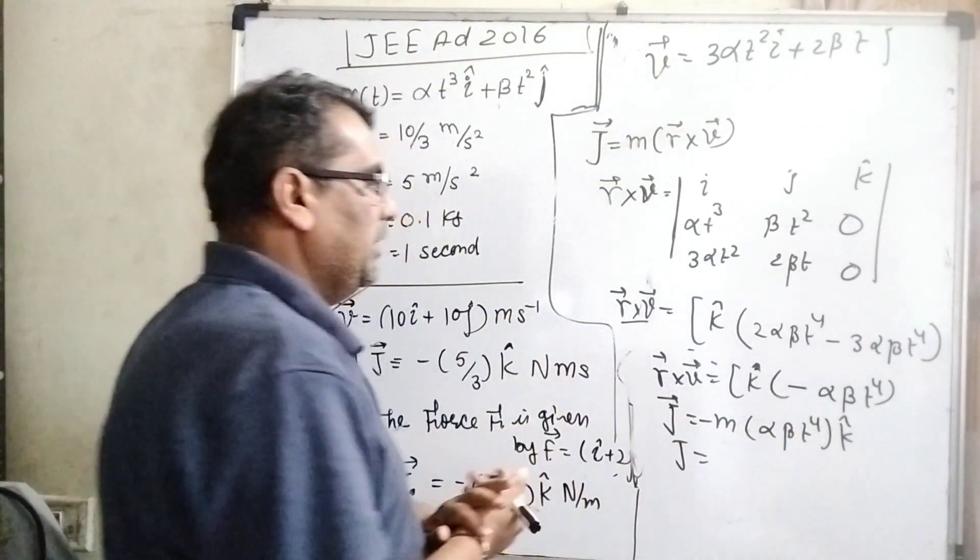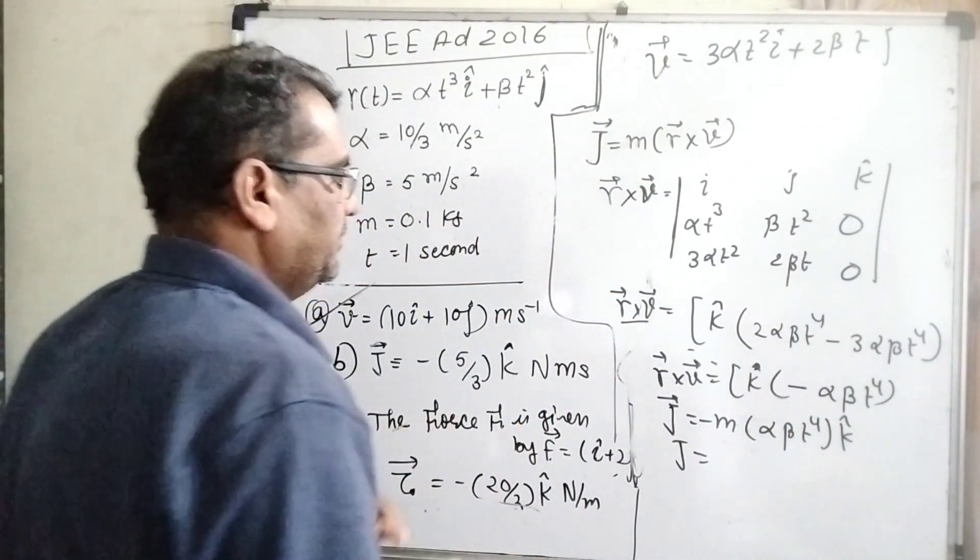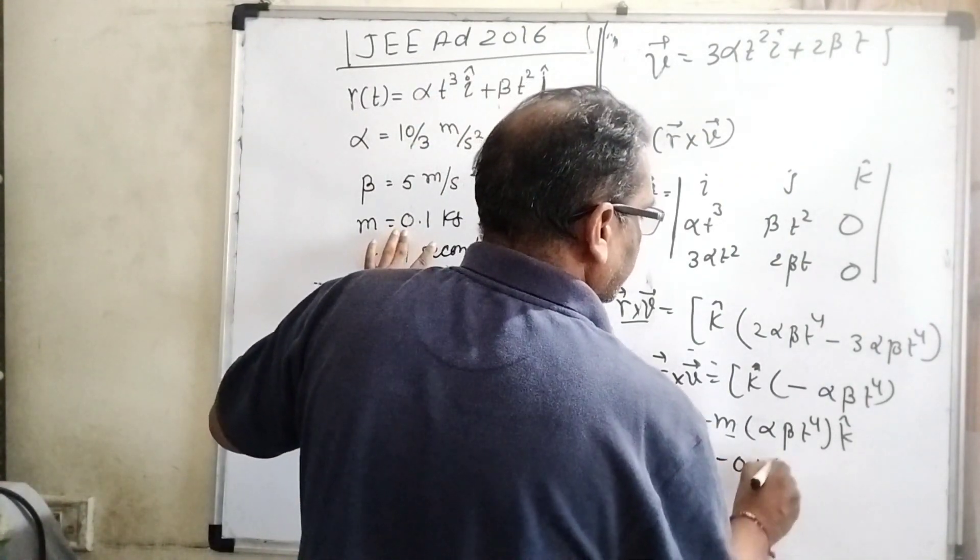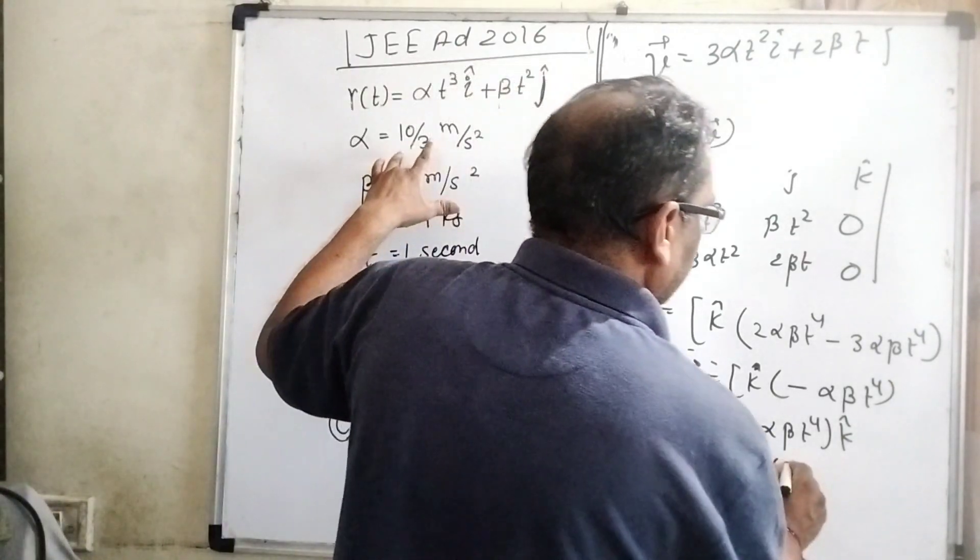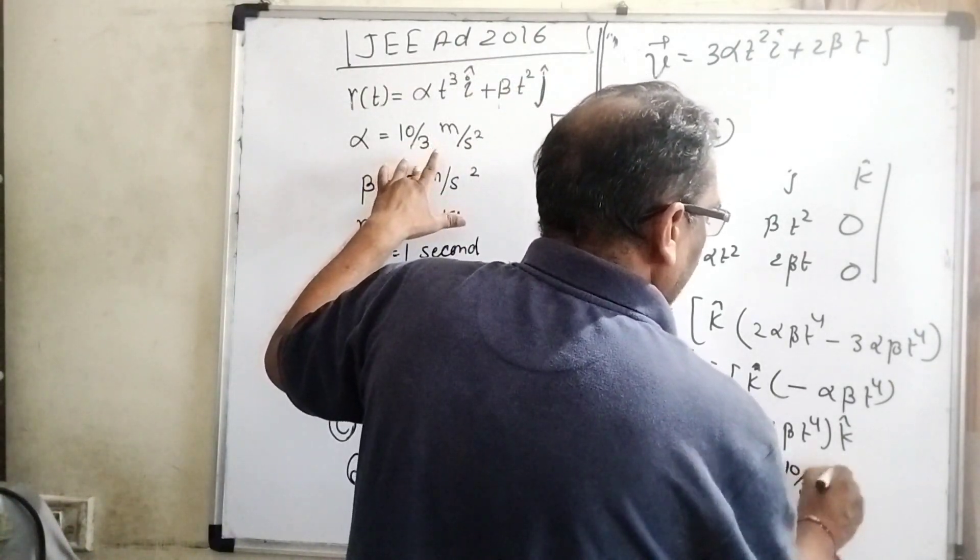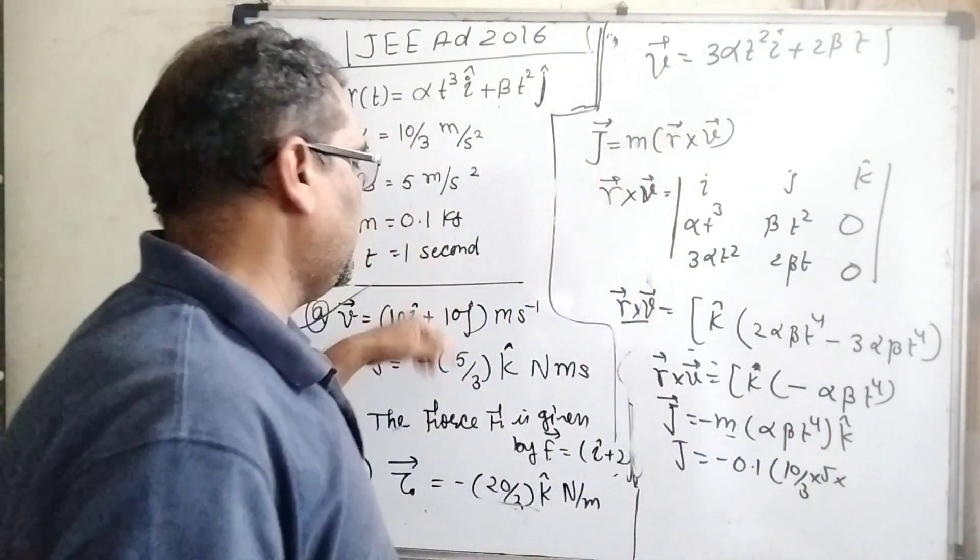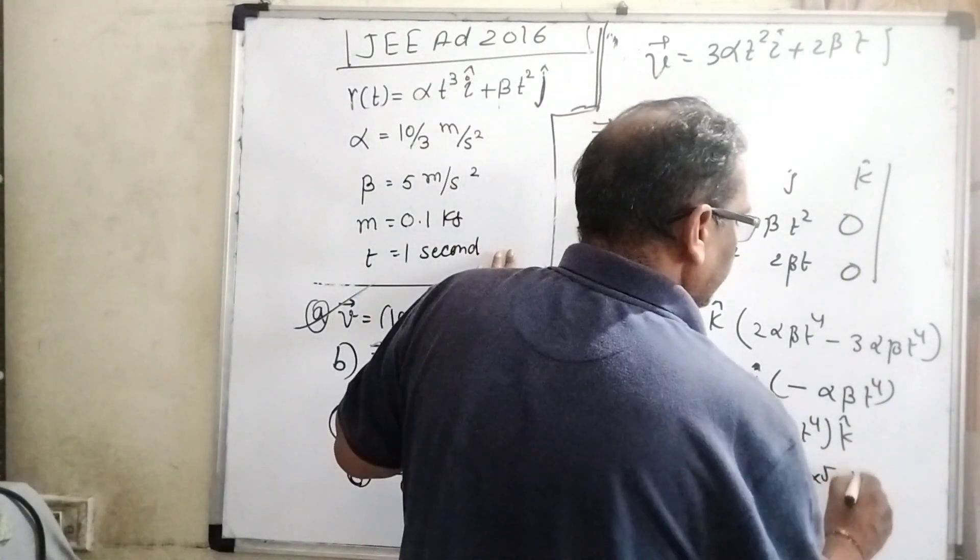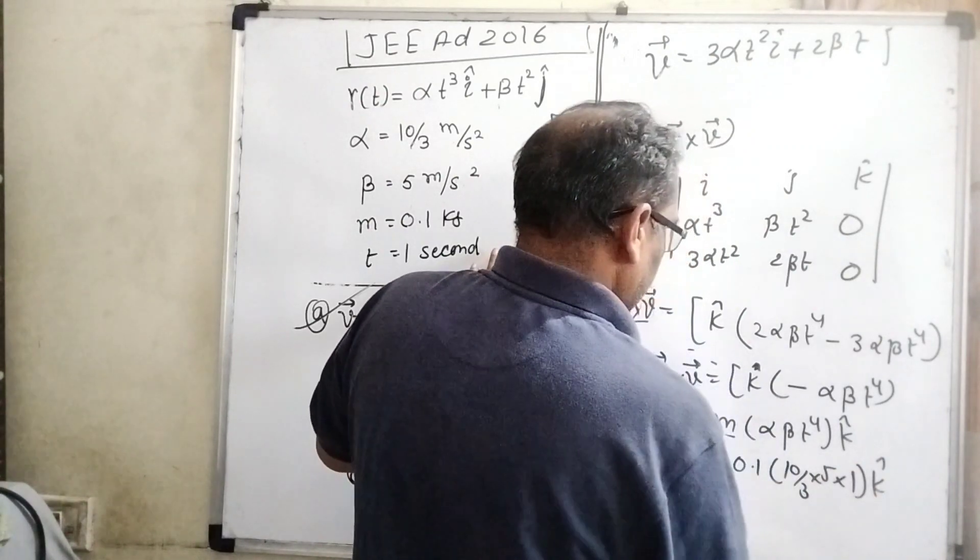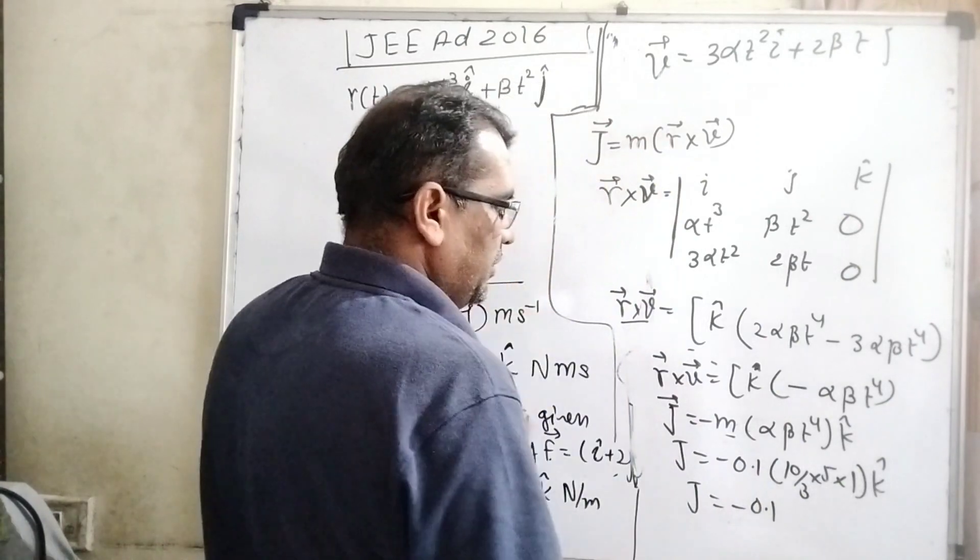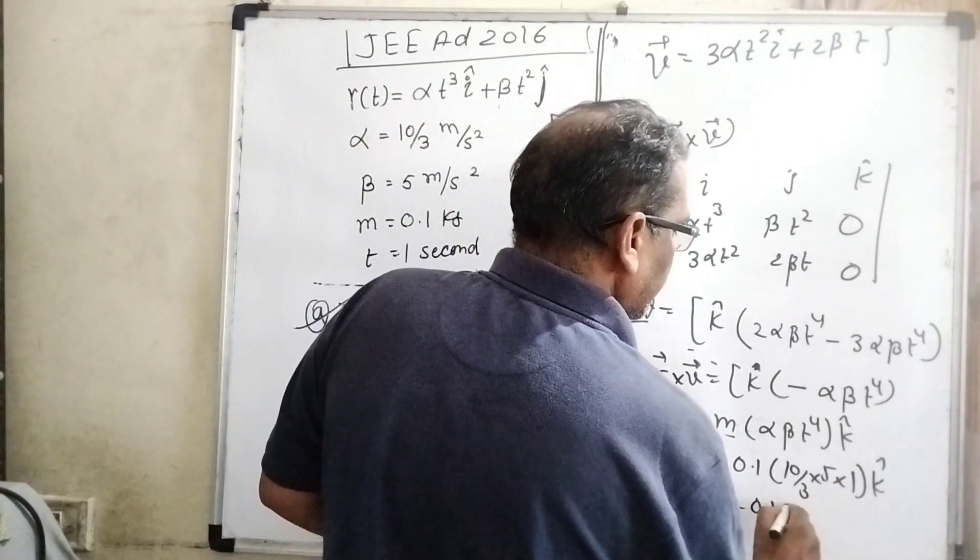Substitute all this value: m, α, β, and t. What is value of m? 0.1. Value of α is 10/3. Value of β is 5. t is 1 second raised to power 4, which is 1, and k cap. Then we get 5 × 10 = 50/3 k cap.